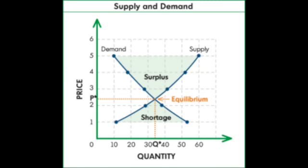Looking back at the graph, there are also places labeled surplus, shortage, and equilibrium. Surplus is when you have a lot of something you're selling but no one wants it. You get rid of a surplus by lowering the cost of the item. This is what Six Flags did with the ice cream from the vending machines.